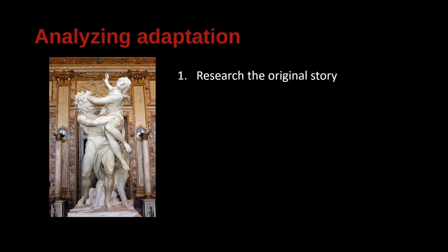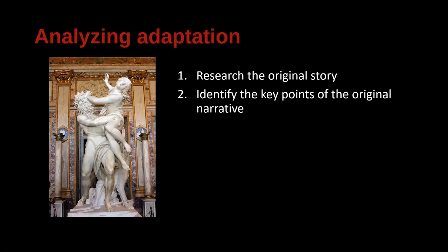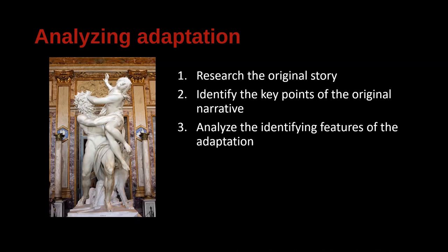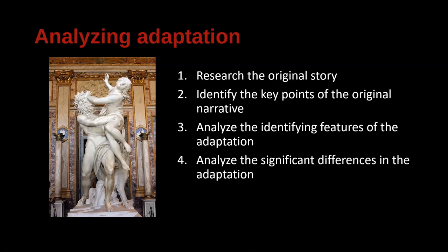So how do we analyze an adaptation? We want to research the original story — figure out what it is and where it came from. Then we want to identify key points of that original narrative. Next, we analyze the identifying features of the adaptation — the similarities between the original and the adaptation that allow us to identify it as an adaptation of the earlier literary work. And finally, we analyze the significant differences in the adaptation, because it is the differences that make the adaptation distinctive, and this is often where you can see the significant elements of meaning in relation to a new cultural and historical context.